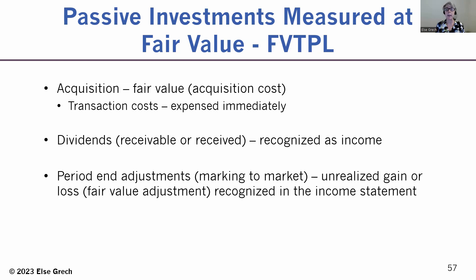The difference between the carrying amount of the investment at the period end and the fair value is often called the fair value adjustment, or it's called unrealized gains or losses. This is recognized on the income statement — and this totally ties into the name 'fair value through profit or loss,' because the income statement can also be called the statement of profit or loss.